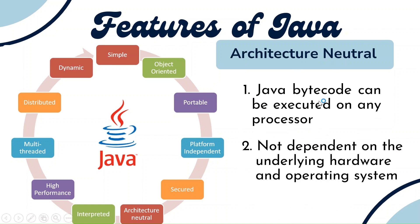The next feature is architecture neutral. Java bytecode can be executed on any processor. Even with a low-level processor in your system, the Java bytecode can still be executed — there is no need for a high-end processor. Whether you use a Celeron or Intel, the same performance is given. Java does not depend on the underlying hardware and operating system, and is not bound to any operating system or hardware, so you can use any type of system.